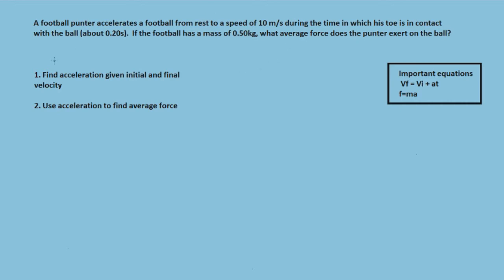If you want to try this on your own, I've laid out the steps you need to solve it. First, find the acceleration given the initial and final velocity, then use that acceleration to find the average force. The important equations are: final velocity equals initial velocity plus acceleration times time, and force equals mass times average acceleration.